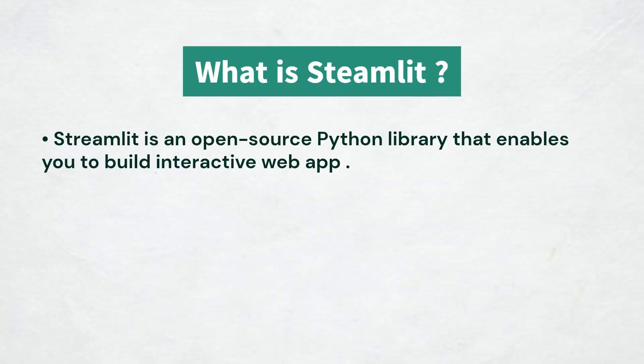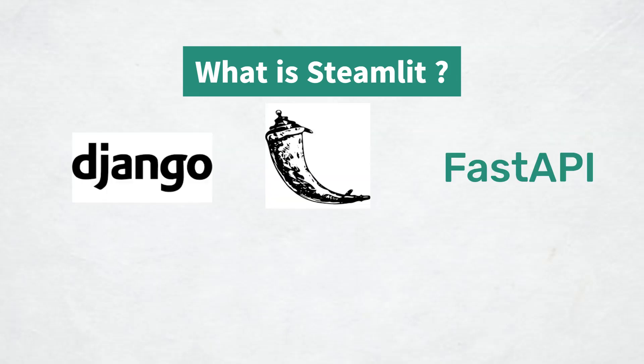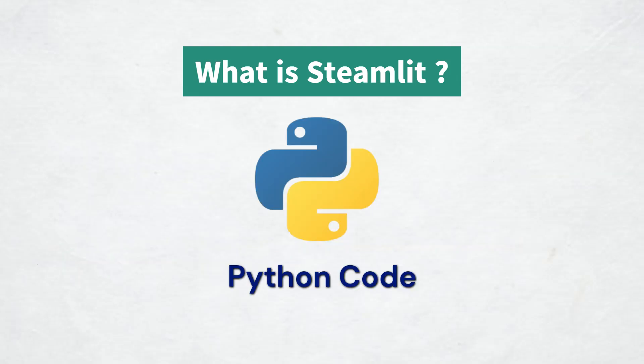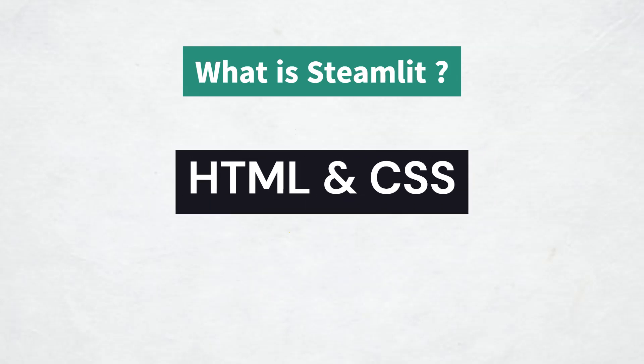Streamlit is an open source Python library that enables you to build interactive web apps quickly and easily. Unlike traditional web development frameworks, Streamlit allows developers to create fully functional web apps with minimal code. Its key feature is that you can focus on your Python code and Streamlit automatically handles the web interface, so you don't have to worry about HTML and CSS.